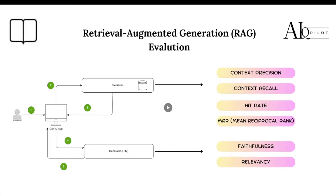Evaluation is a key part here, because evaluating a RAG system ensures that it is actually doing the job effectively — retrieving accurate information and generating meaningful responses. That's the reason we focus on RAG evaluation in this video. As you can see here, I listed six main metrics that can be used to evaluate a RAG system, and those evaluation metrics are based on the two components: retriever and generator.